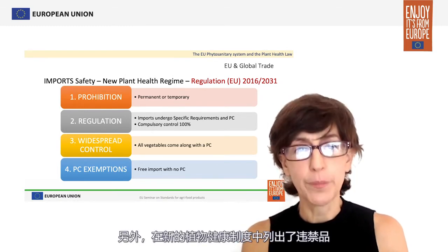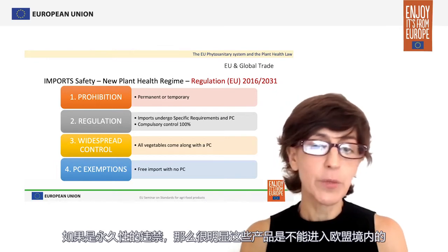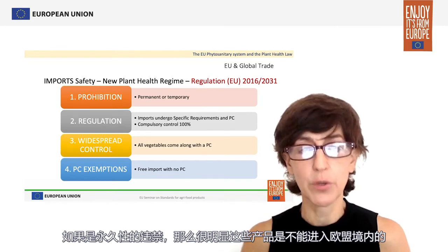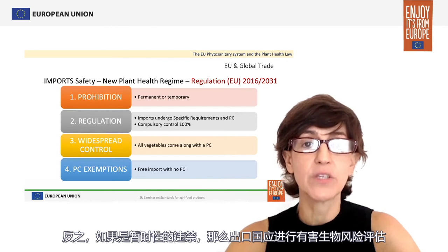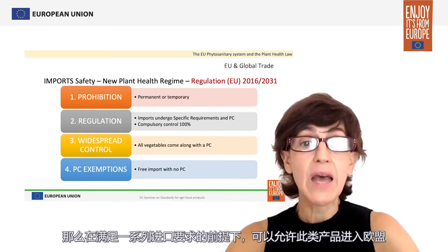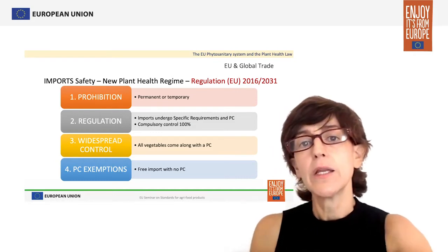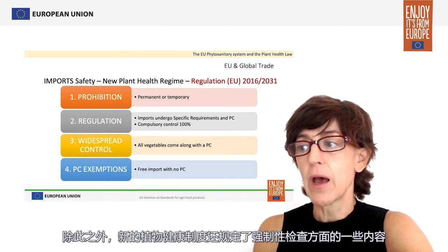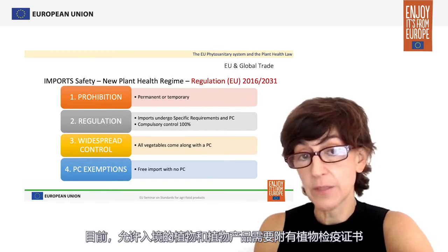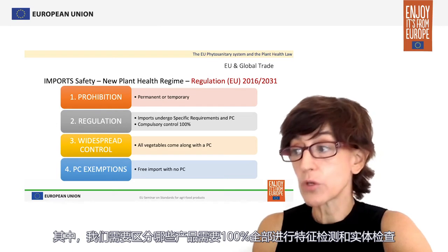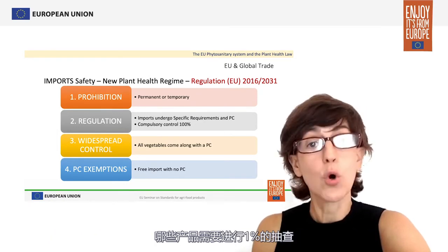Also, in the new plant health regime there is a set of prohibited products. The prohibition might be permanent or temporary. If it is permanent, those products cannot enter the territory of the European Union. If the prohibition is temporary, the exporting country shall conduct a pest risk assessment which, if found favourable, may allow for the entry of such products provided they fulfil a set of import requirements. The new plant health regime also sets out mandatory checks. Plants and plant products whose entry is allowed will be accompanied by a phytosanitary certificate. Among these, we need to distinguish between those that will require both identity and physical checks on 100% of cases, and those that will undergo inspection on only 1% of instances.